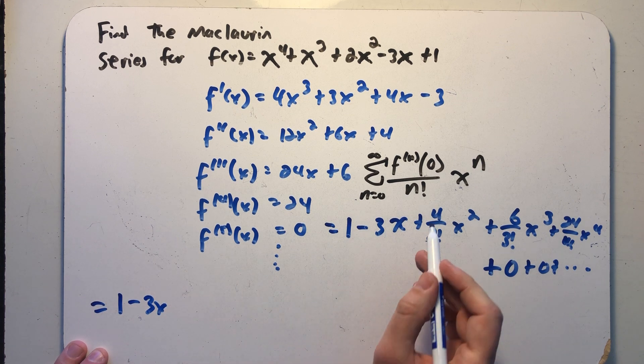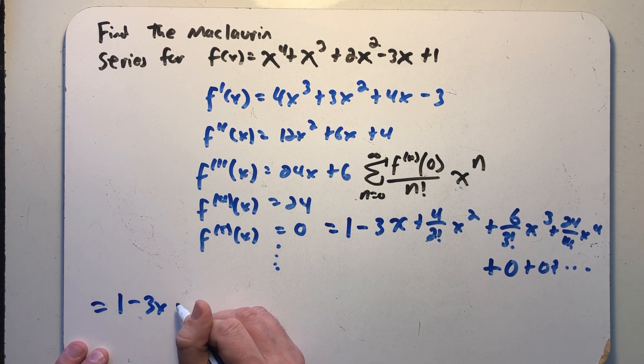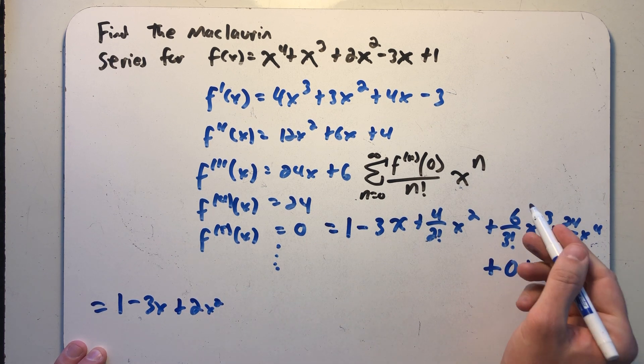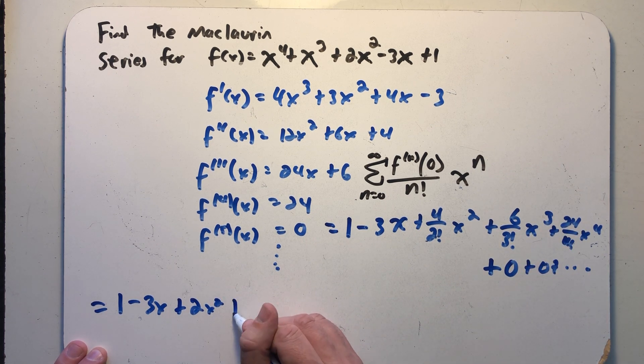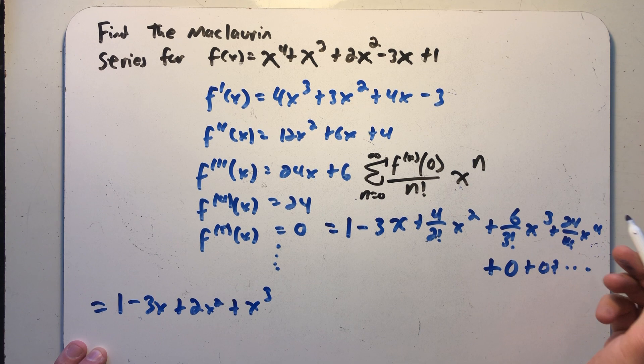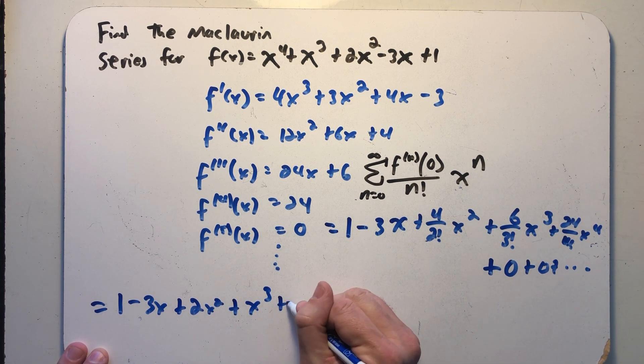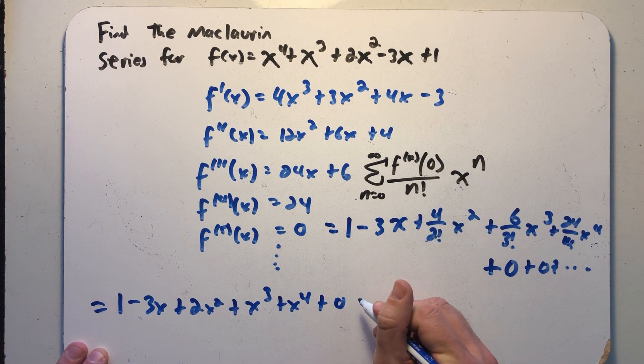I have one minus three x. Four over two factorial is, well, two. Six over three factorial, that's six over six is one. 24 over four factorial, four factorial is 24. I get plus x to the fourth and then plus a whole lot of zeros forever.